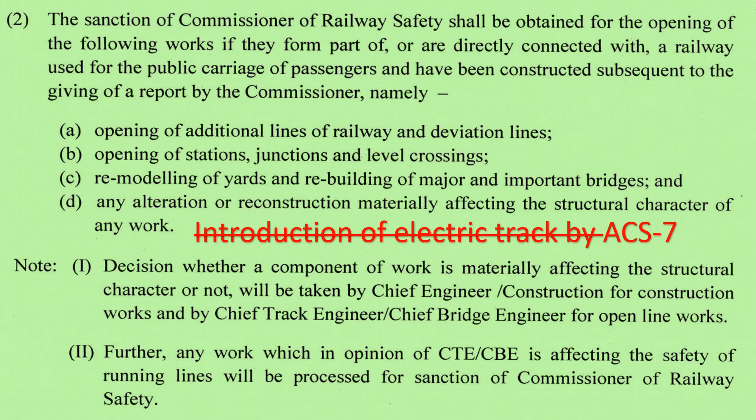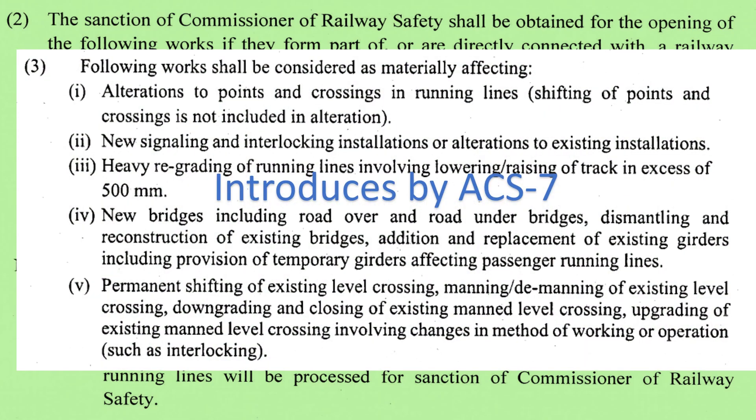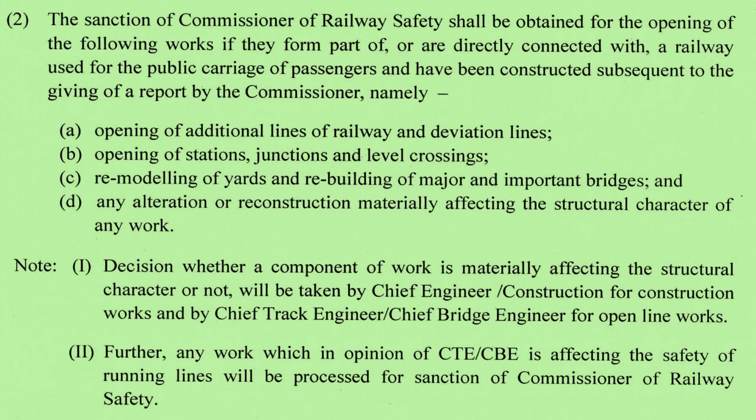Any alteration or reconstruction materially affecting the structural character of the work — the definition of what constitutes 'material affecting structural character' which was given in previous ACS 3 — is now removed by ACS 9 from para 1202. A note has been added at the end of sub-para 2: the decision whether a competent work is materially affecting the structural character or not will be taken by the Chief Engineer (Construction) for construction work, and by Chief Track Engineer or Chief Bridge Engineer for open line work. Further, any work which in the opinion of the CTE or CBE is affecting the safety of the running line will be processed for the sanction of the Commissioner of Railway Safety.